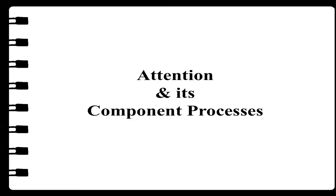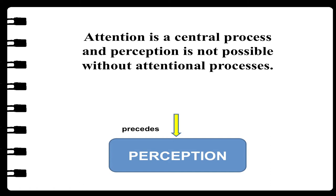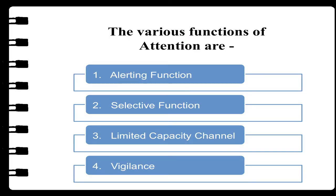Let's begin with the first objective: attention and its component processes. Attention is a central process and perception is not possible without attentional processes — that means attention precedes perception. Attentional processes serve various functions in the organization of our perceptions and other cognitive functions. The various functions of attention are: number one, the alerting function; number two, the selective function; number three, limited capacity channel; and number four, vigilance.